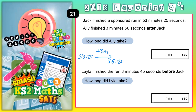Now remember, there are only 60 seconds in 1 minute. This is why you've got to be very careful if you're using a column method — column methods are based on things being out of 100, 1000, or 10, like column headings: tens, hundreds, thousands. Time isn't out of that — it's out of 60 with minutes, seconds, and hours.